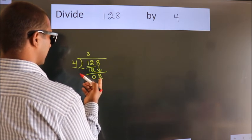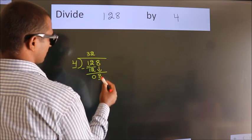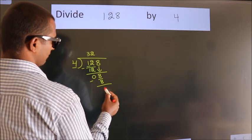When do we get 8? In the 4 table. 4 twos is 8. Now we subtract. We get 0.